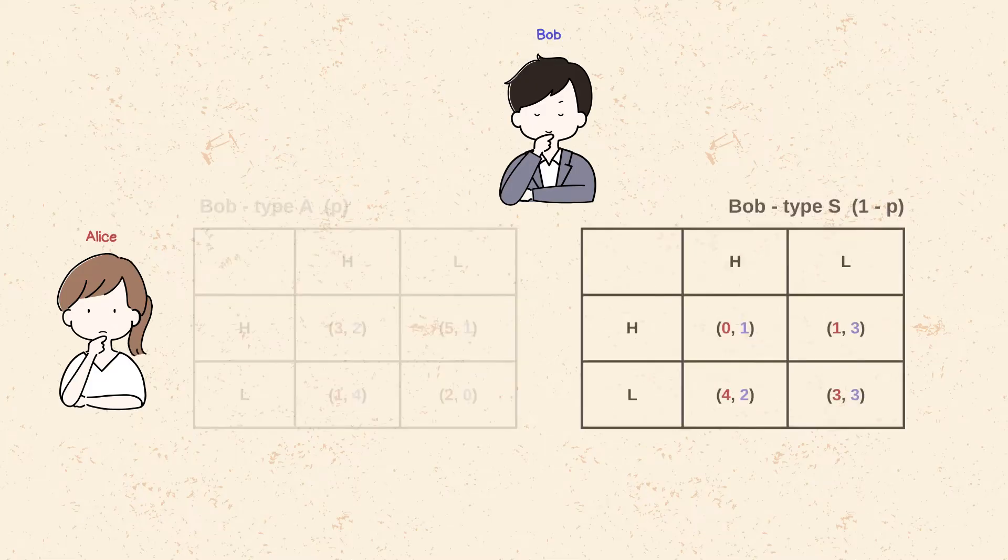If she knows Bob is of type S, then her dominant strategy is to bid low.